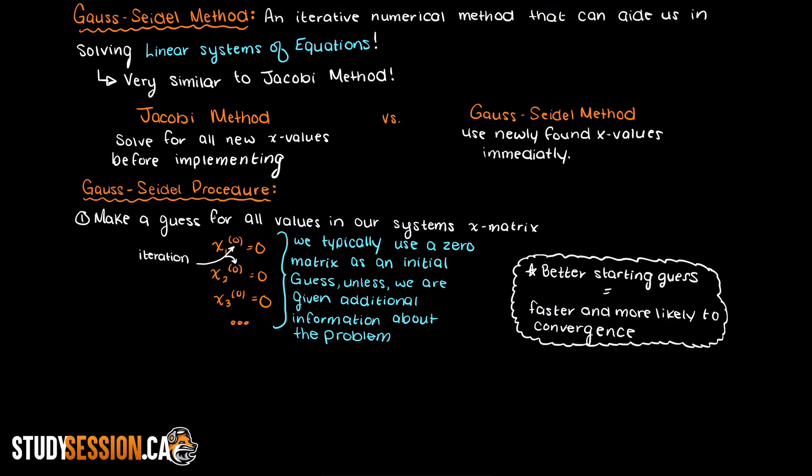However, as I mentioned earlier, if the matrix is diagonally dominant then you can literally put any guess here and it will eventually converge.